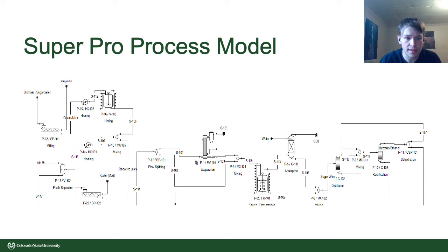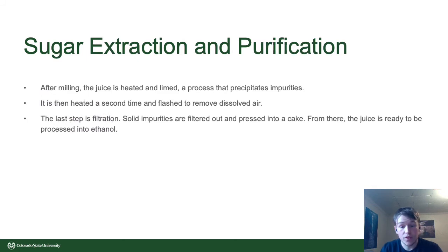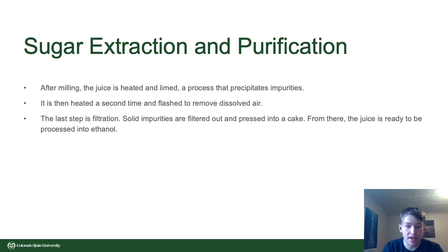Shown here is a SuperPro model of the entire process going from start to finish, from the raw sugarcane biomass all the way to anhydrous ethanol. You can see the various steps from heating, milling, and filtration, all the way to fermentation, the various distillation columns, and dehydration. First, the sugarcane has to be milled to extract the juices. Then the juice has to be heated up and limed, which precipitates some of the undesired impurities. Then it has to be flashed to remove all air. Then it's filtered and the solid filtrant is pressed into a cake — just straight raw plant material. From there it's ready to be evaporated and then fermented.